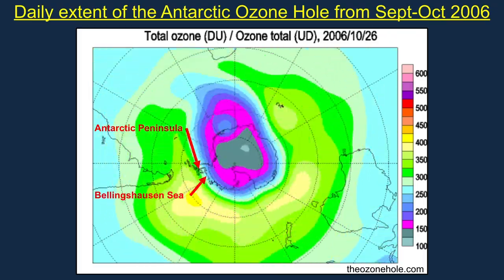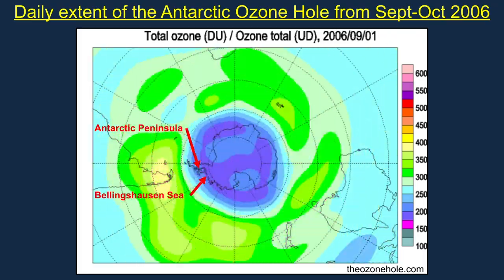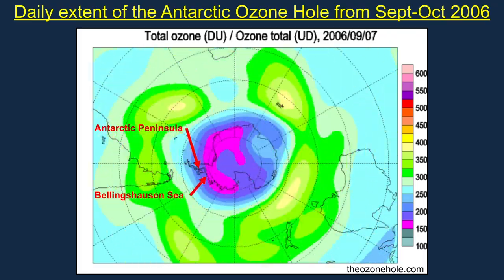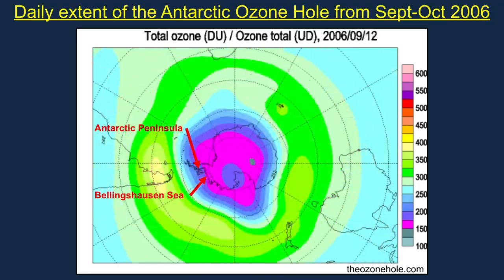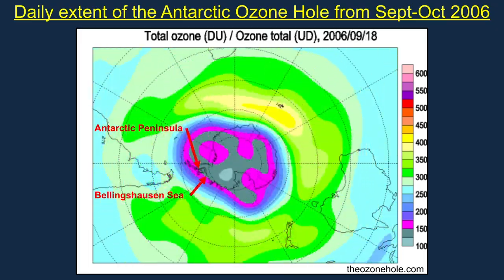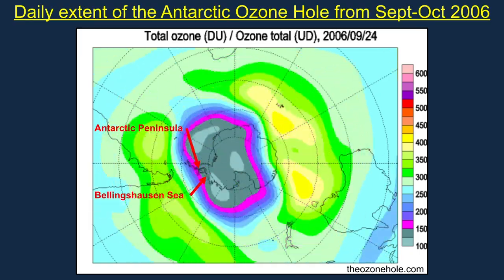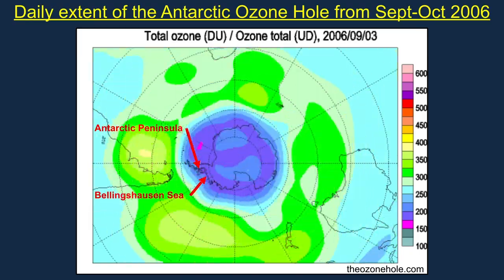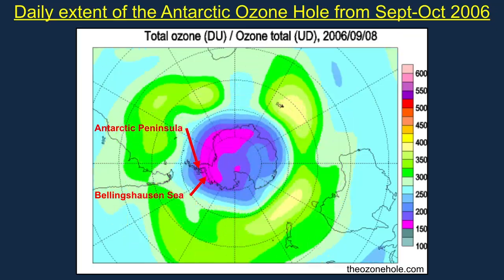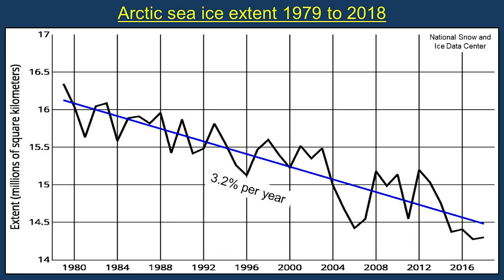The extent of the Antarctic ozone hole explains why warming was greatest on the Antarctic peninsula, why southern oceans surrounding Antarctica showed major warming, and why the Bellinghausen Sea warmed one degree Celsius. Ozone depletion in the Arctic region explains why ice covering the Arctic Sea has been decreasing at a rate of 3.2% per year since 1979. All of these observations cannot be explained as directly using greenhouse warming theory.